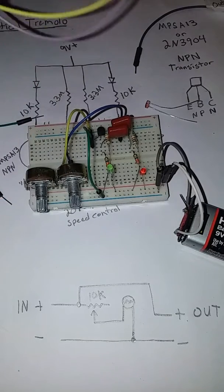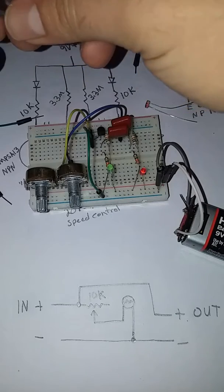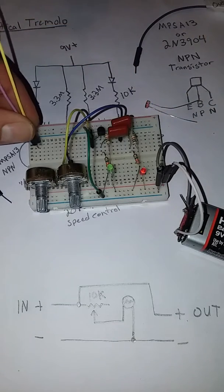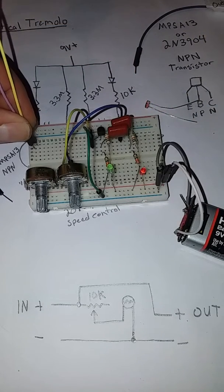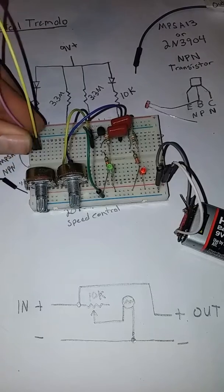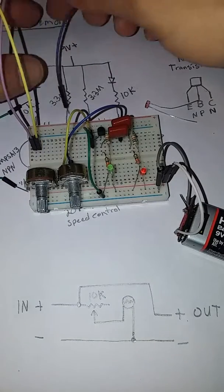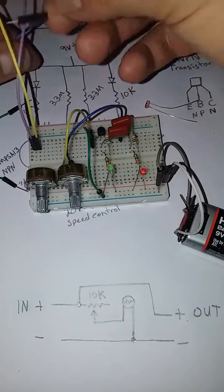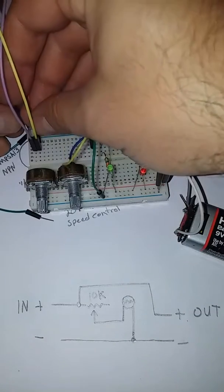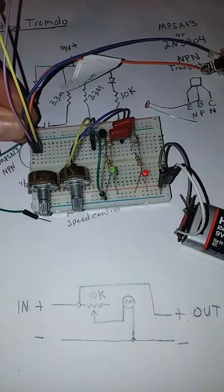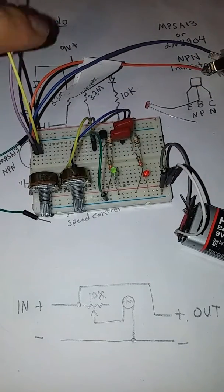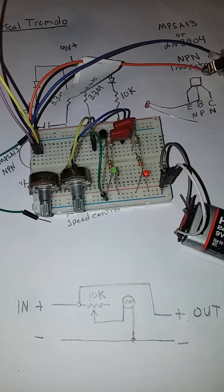I've got my input here. The yellow is the positive, the purple is the negative. I'm just going to plug them in right here. I've got my output where the orange is the positive and the blue is the negative. So I've got my input going straight through my output.